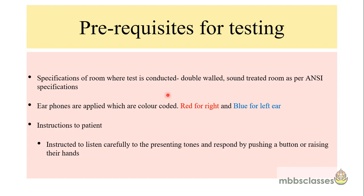Before we understand an audiogram we must know these audiogram legends. There are certain prerequisites for doing audiometry. The room where audiometry is done should be a double-walled, sound-treated room as per NC specifications. The earphones used are color coded: red for right ear and blue for left ear. Patients are instructed to listen carefully to the tones and respond either by pushing a button — which generates a flashlight on the audiometer — or by raising their hand.